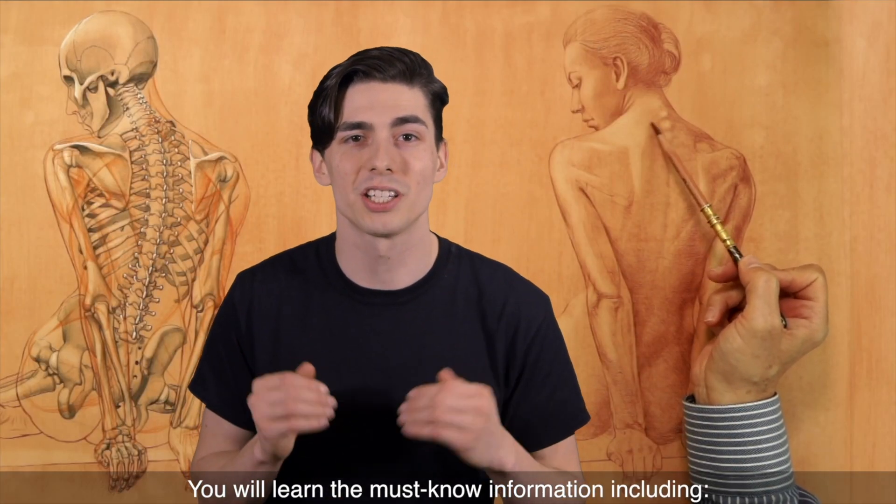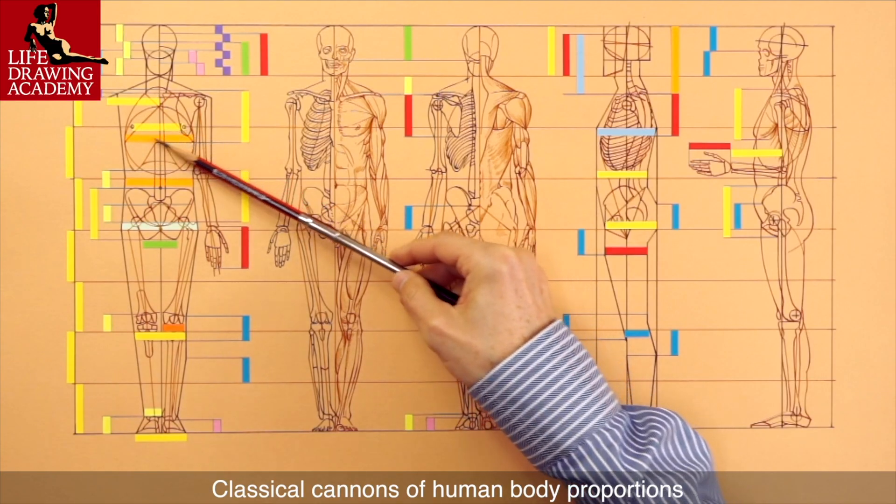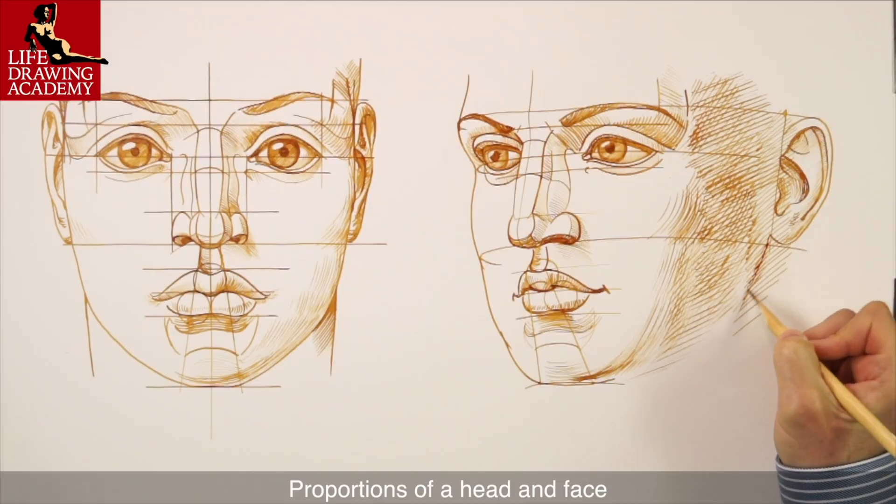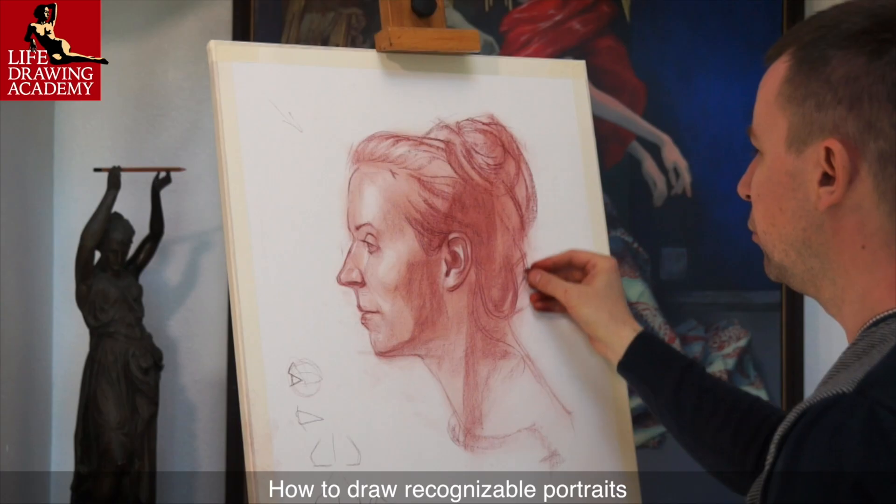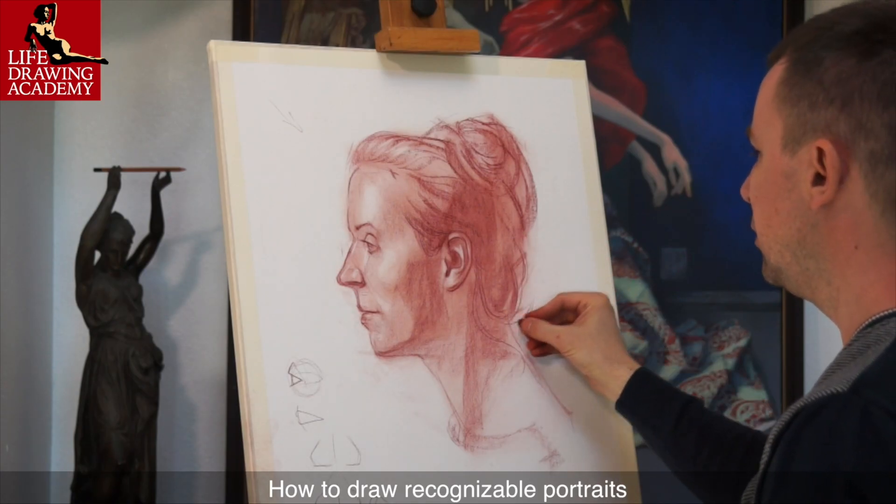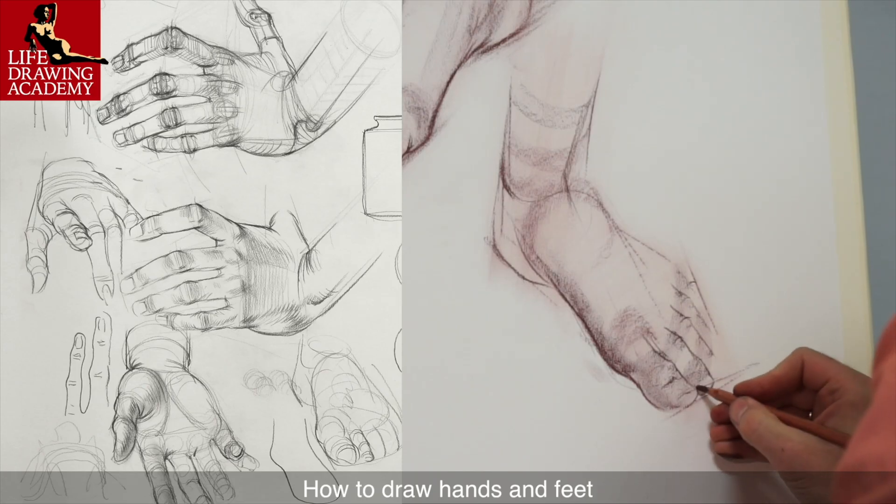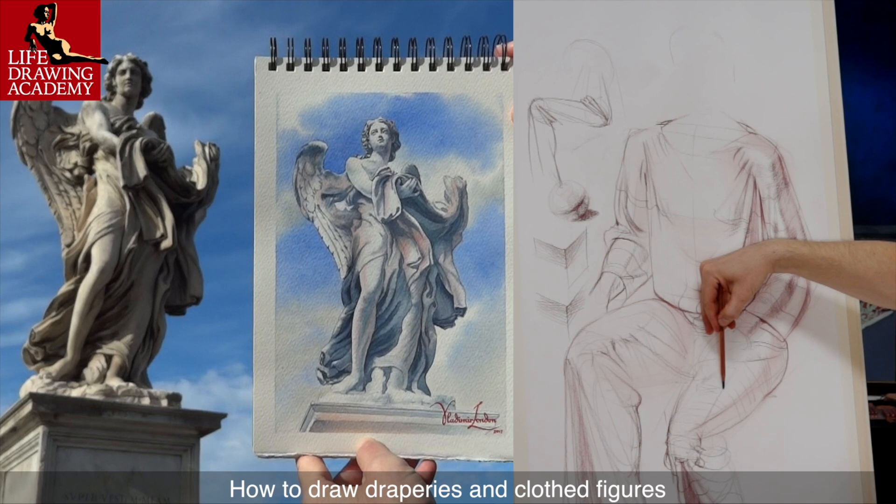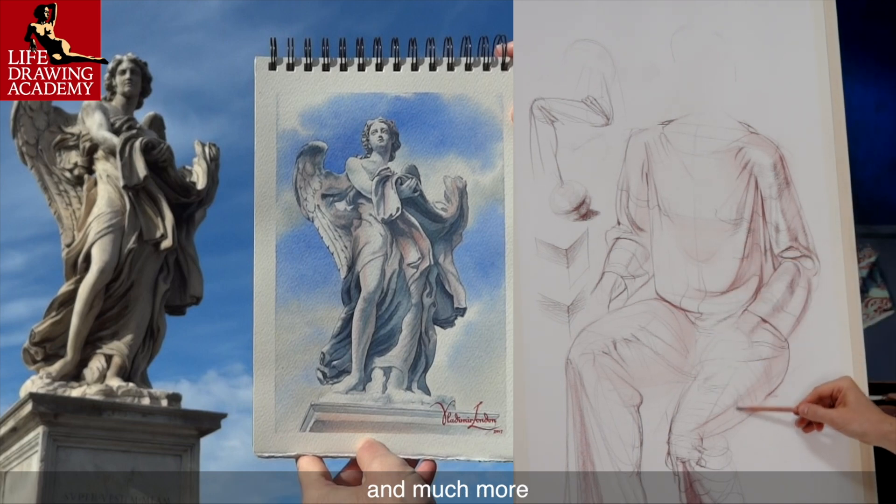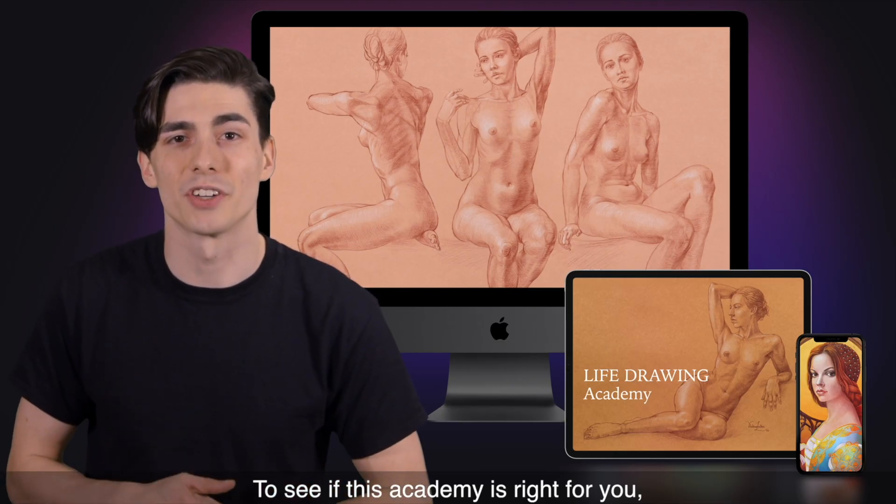You will learn the must-know information, including classical canons of human body proportions, proportions of a head and face, how to draw recognizable portraits, how to draw male and female figures, how to draw hands and feet, as well as how to draw draperies and clothed figures, and much more.